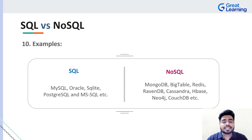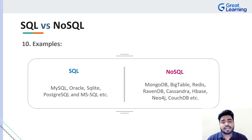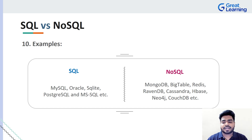The last comparison covers complex queries and examples. SQL is best suited for complex, larger queries. NoSQL is not as suitable for complex queries. For examples — SQL databases include MySQL, Oracle, SQLite, PostgreSQL, and MSSQL. NoSQL databases include MongoDB, Bigtable, Redis, RavenDB, Cassandra, and others.